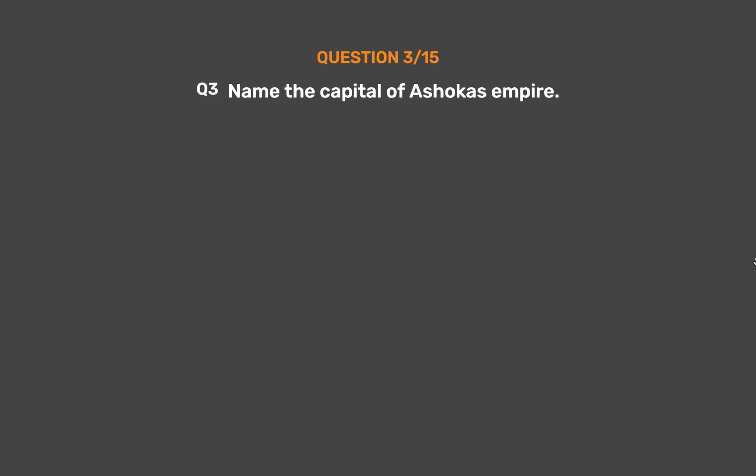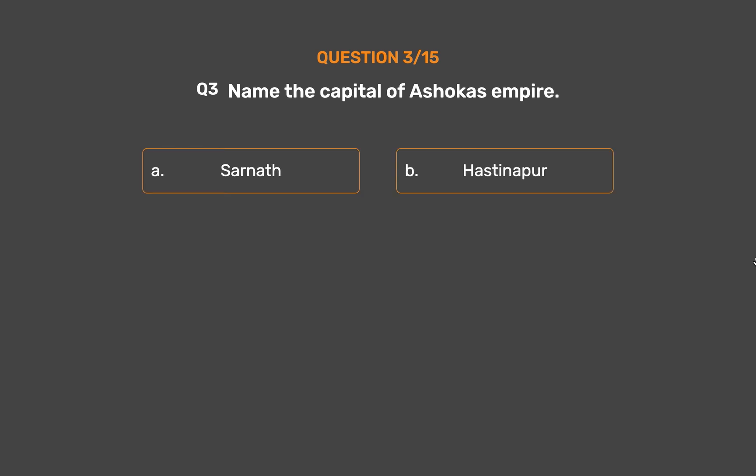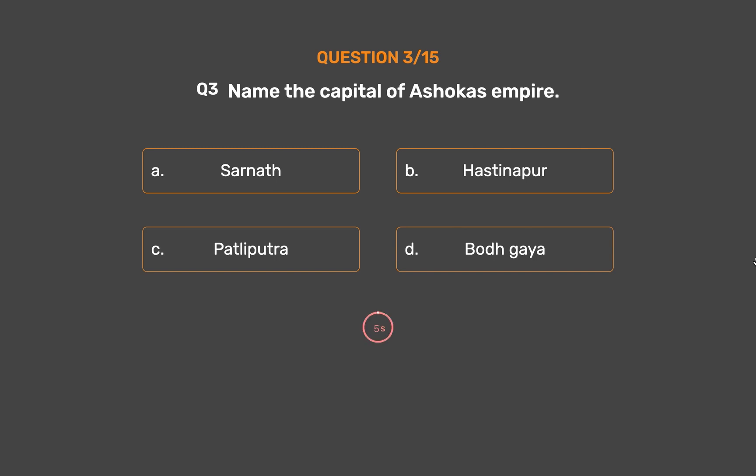Question No. 3. Name the capital of Ashoka's empire. Option A: Sarnath. Option B: Hastinapur. Option C: Pataliputra. Option D: Bodh Gaya.